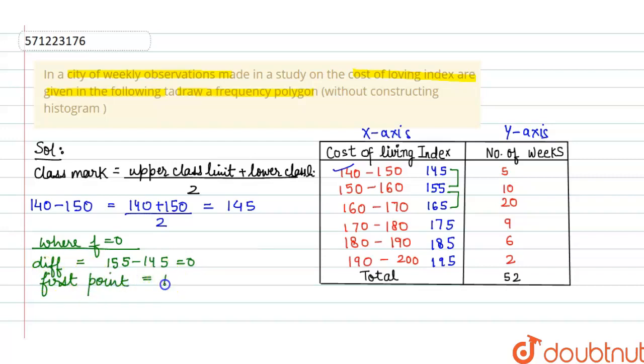Now we have to find the first point. The first point is first class mark minus 10, which is 145 minus 10 equals 135. And the last point is last class mark 195 plus 10 equals 205. So we have the points (135, 0) and (205, 0) on which we have to plot the frequency polygon.